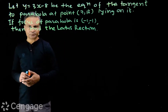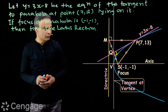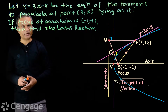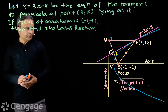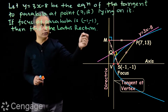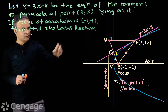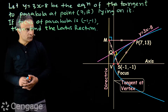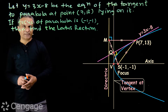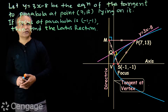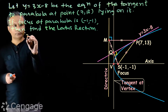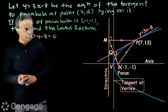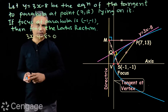Let us recall the properties of tangent. Looking at the figure, we have a parabola with focus S at coordinates (-1, -1) and point P on the curve having coordinates (7, 13). SP is the focal length and M is the foot of the perpendicular from point P on the directrix. The equation of tangent at point P is given as y = 3x - 8, or equivalently 3x - y - 8 = 0. We need to find the length of the latus rectum of this parabola.